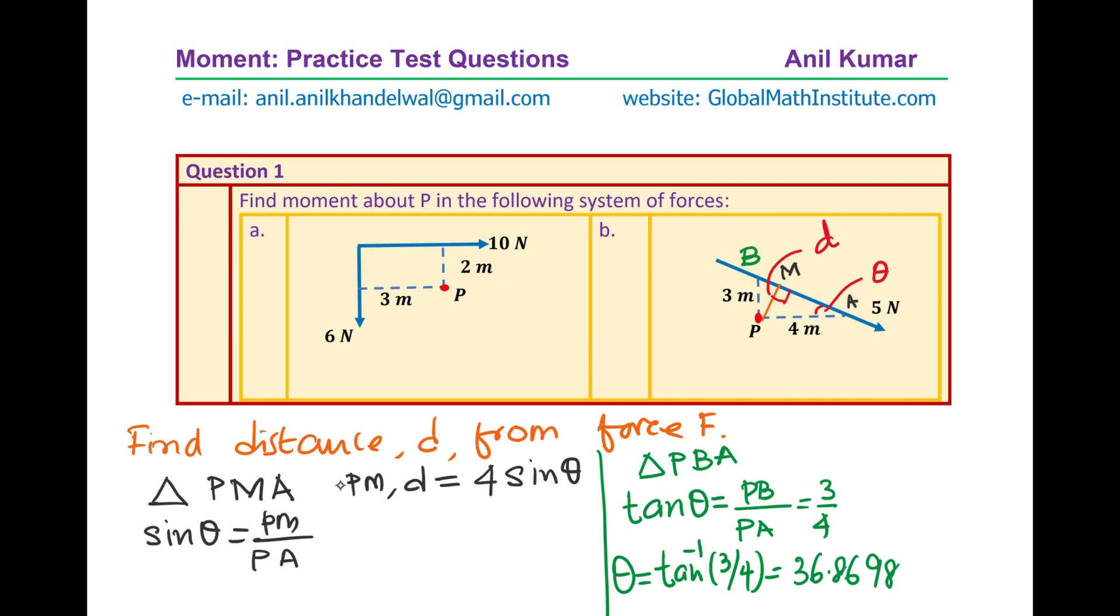So that gives me 36.86998. So that is the value of theta. Now substituting this value of theta we can now find the shortest distance d. So now we can say d is 4 sine of this particular angle which is 36.8698, which is 3 over 5.